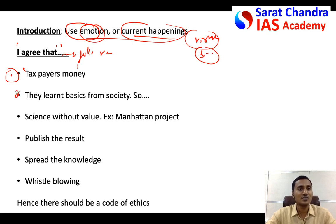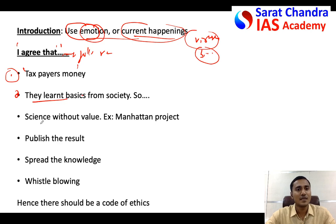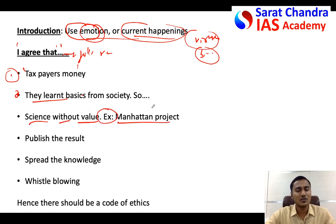You can also say that scientists learned basic sciences from society through schools, so it is their responsibility to produce innovations useful to society. Similarly, science without values is dangerous and harmful for society at large. You can give the example of dynamite by Alfred Nobel, or mention the scientists involved in the Manhattan Project who faced moral questions about their involvement in creating nuclear weapons.